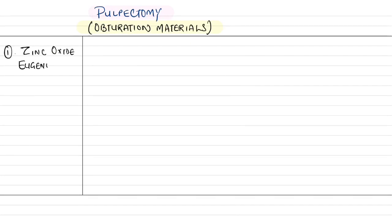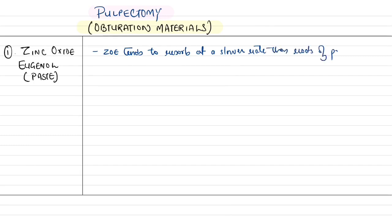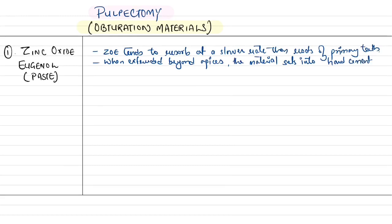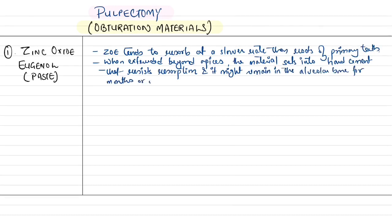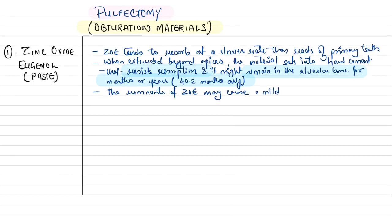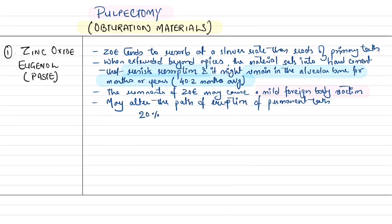Obturation materials for pulpectomy include: zinc oxide eugenol (ZOE) paste — though it tends to resorb at a slower rate than primary tooth roots; when extruded beyond the apex it sets into hard cement, resisting resorption and potentially remaining in alveolar bone for an average of 40.2 months; ZOE remnants may cause a mild foreign body reaction; and it may alter the eruption path of the permanent tooth by up to 20% — potentially causing ectopic eruption.